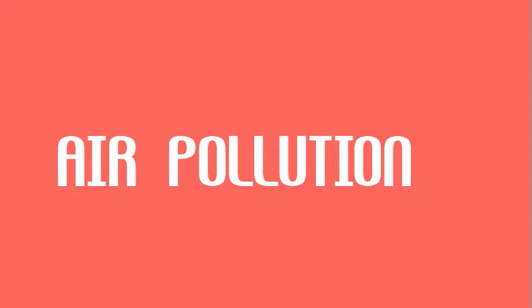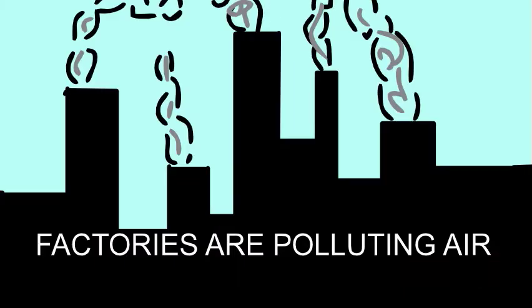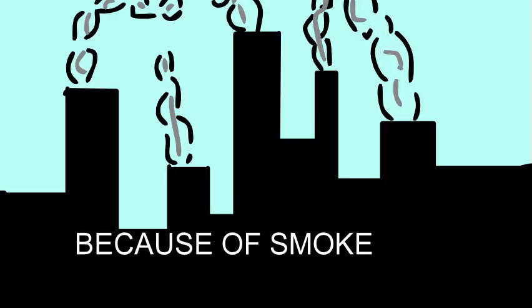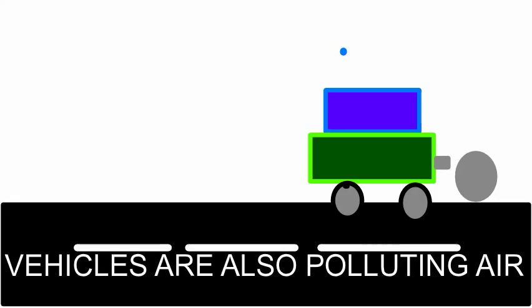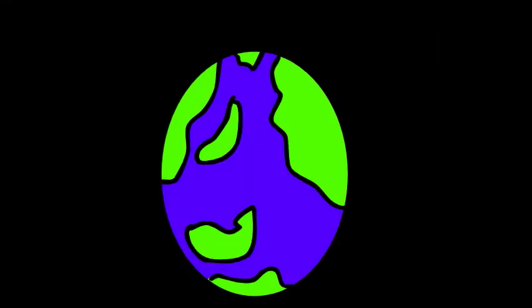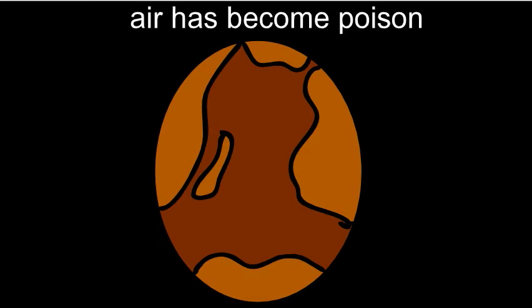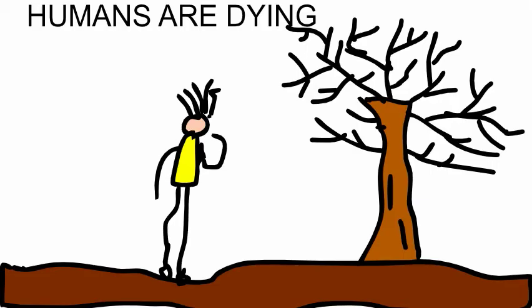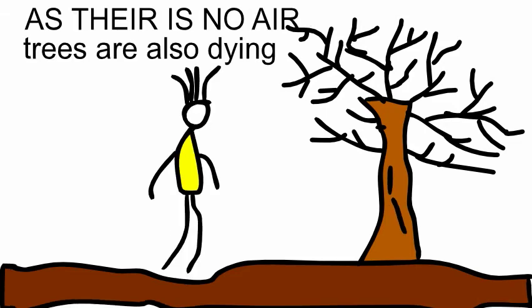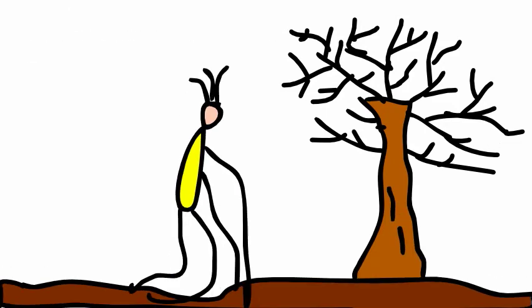Good morning everybody, my name is Shubhang. I am from 4th E. I am going to present my project on air pollution. Factories are polluting air because of smoke. Vehicles are also polluting air. The earth has been spoiled. Air has become poisonous. As humans are dying because there is no air, trees are also dying.